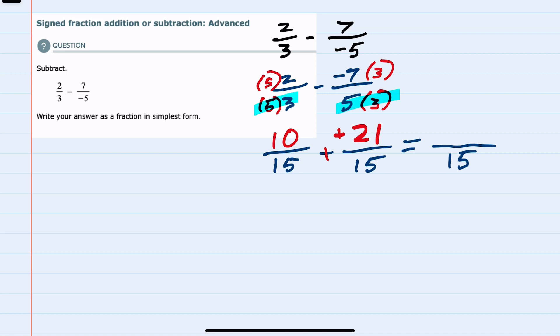When the signs are the same, we would add and keep the sign, so it would be positive. Our fraction here, 31 over 15, is in simplest form, since there's no whole number that will divide evenly into both, so we have subtracted those fractions.